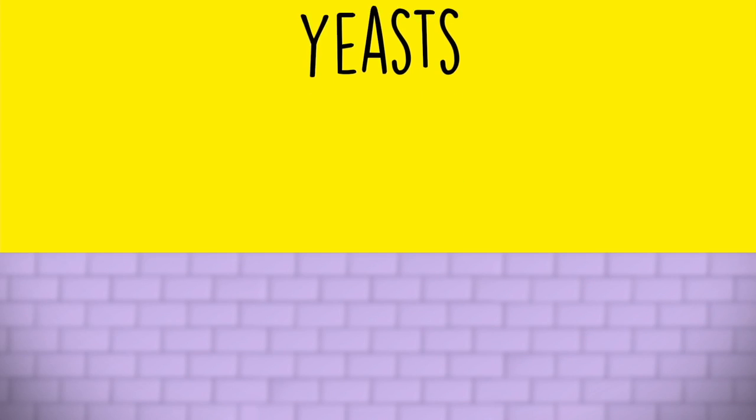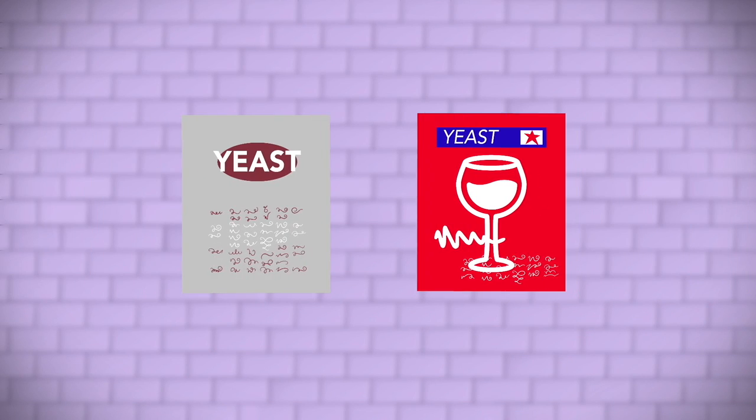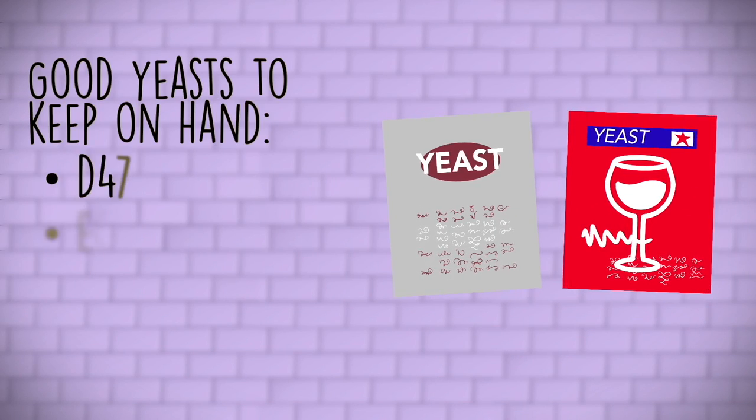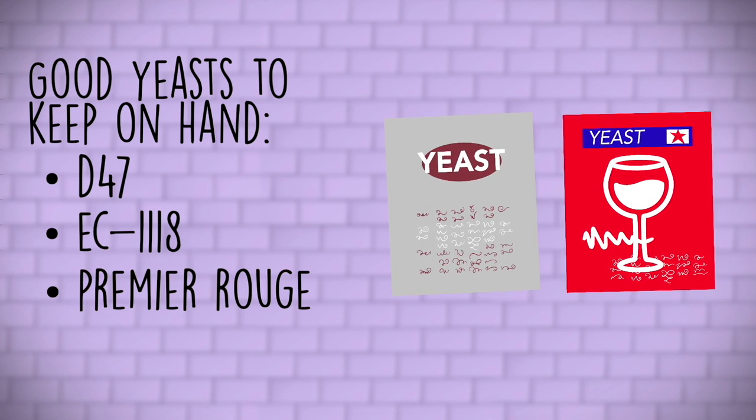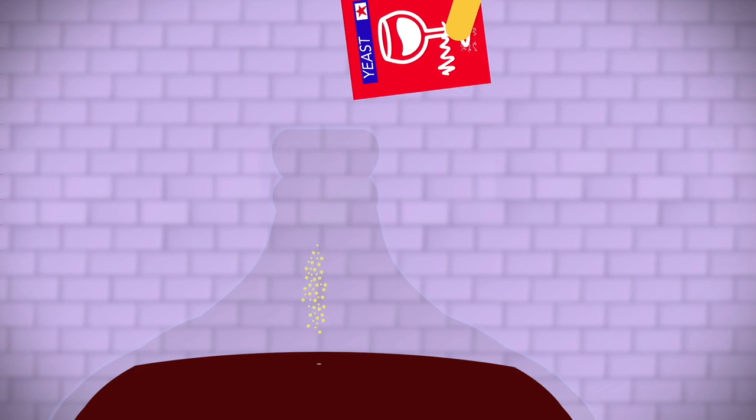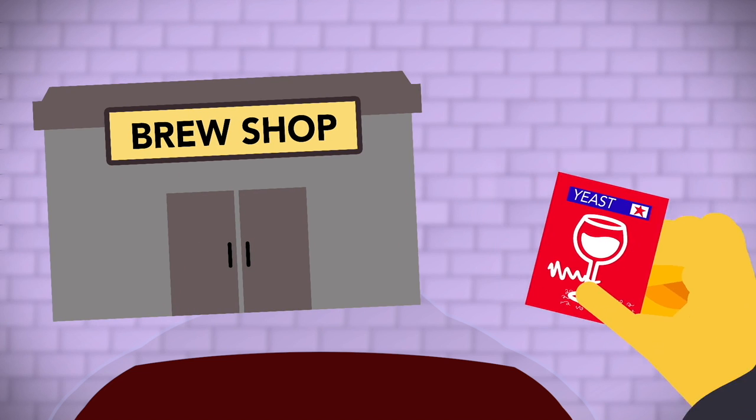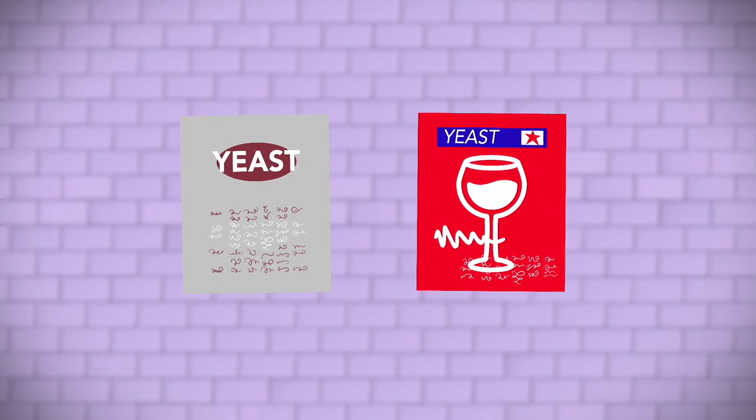Yeasts. Some folks, myself included, like to keep certain yeasts on hand. My current lineup includes D47 and EC1118, but I've also had Premier Rouge on hand for fermenting fruity reds. It's nice to be able to grab a packet from the fridge and ferment, rather than run down to the brew shop or wait for an Amazon delivery. We'll have more on yeasts in part two of this series.